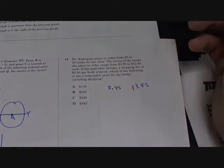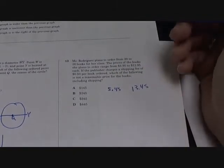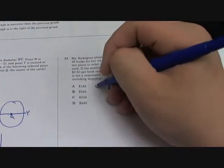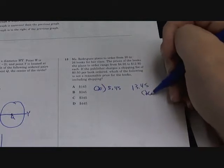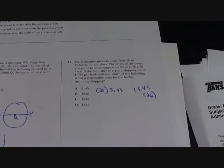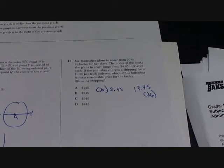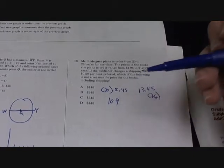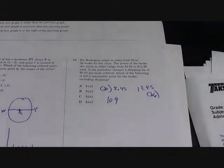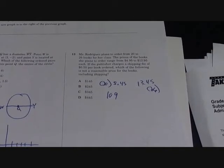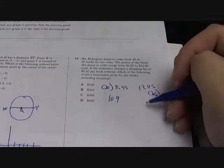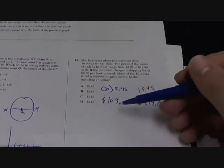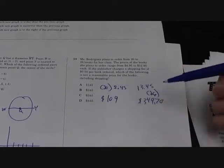You're gonna plug in 20 and 26, gotta find the ranges. You plug in 20, so 20 times this, and then 26 times this. Do your calculators, so 20 times $5.45 is $109 - this is the lowest, the cheapest you can pay. And $13.45 times 26 is $349.70. So this is the least amount of money you're gonna pay and this is the most.